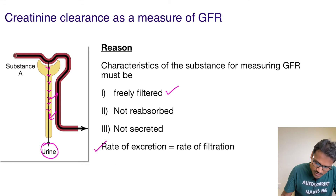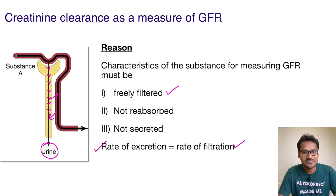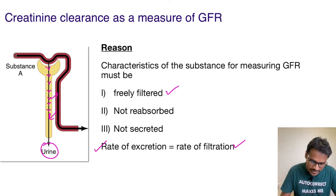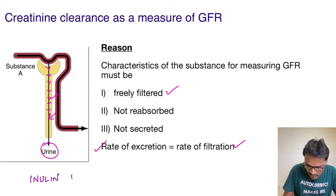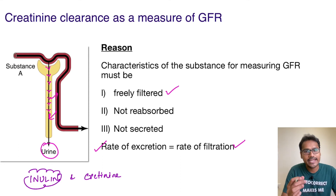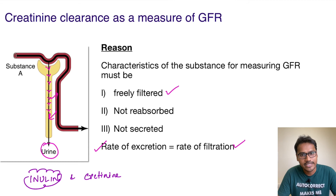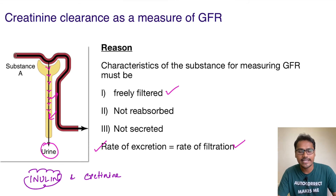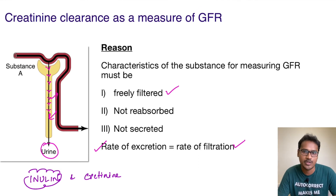The rate of excretion should equal the rate of filtration. There are a few substances which qualify these three characteristics. Out of them, two are very important: that is inulin, and another one is creatinine. The problem with inulin is it is not endogenously produced — meaning it is not produced by the body; it has to be injected intravenously. So this is one of the greatest disadvantages of inulin.